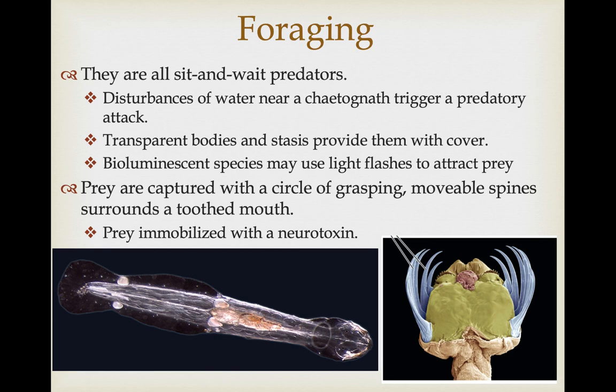Their foraging strategy is sit-and-wait predation. Any disturbance in the water detected by the ciliary sensory structures triggers the spines to grab hold of prey, which are then chewed up with the teeth. Their transparent bodies also provide protection from being sensed by their prey, and being static sit-and-wait predators gives them additional camouflage.